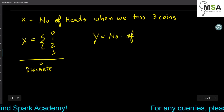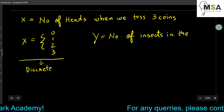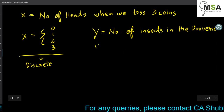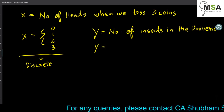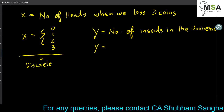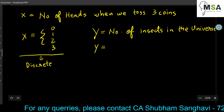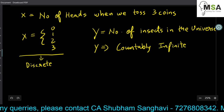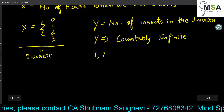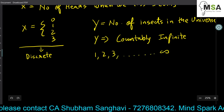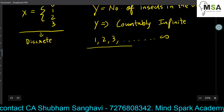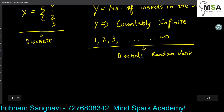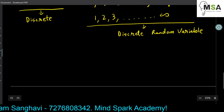Let's take another example: number of insects in the universe. The different values Y can assume are 1 insect, 2 insects, 3 insects, 4 insects, and so on up to infinity — but they are still countable. So Y is countably infinite. Numbers we can count 1, 2, 3 — even going on to infinity — are also known as discrete random variables.